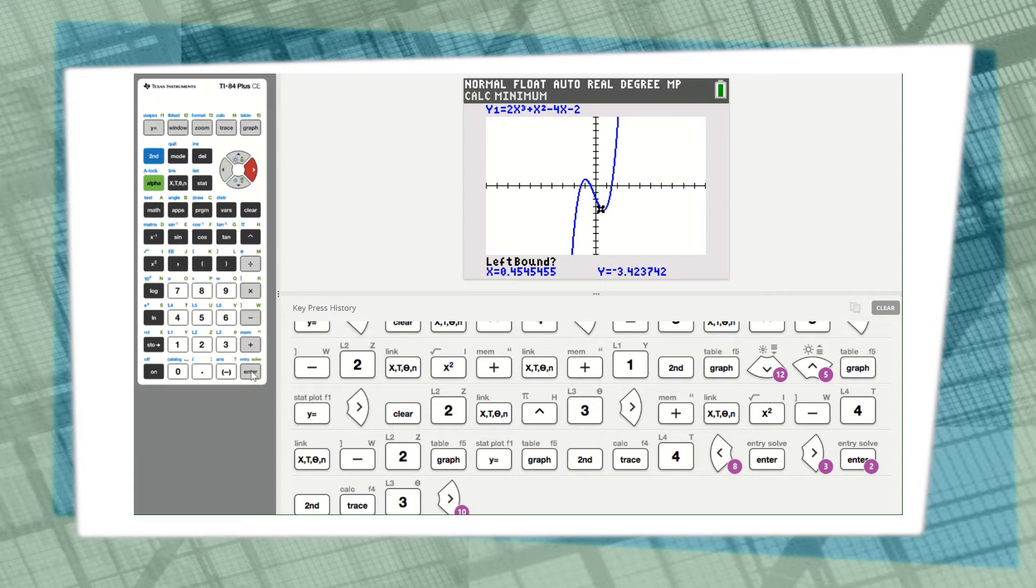I'm going to move my cursor down to where it's just above the minimum. That looks pretty close to the left bound. I'm going to hit enter. Then I'm going to move it a couple of spots to get to the right of the relative minimum point, and I'm going to hit enter.